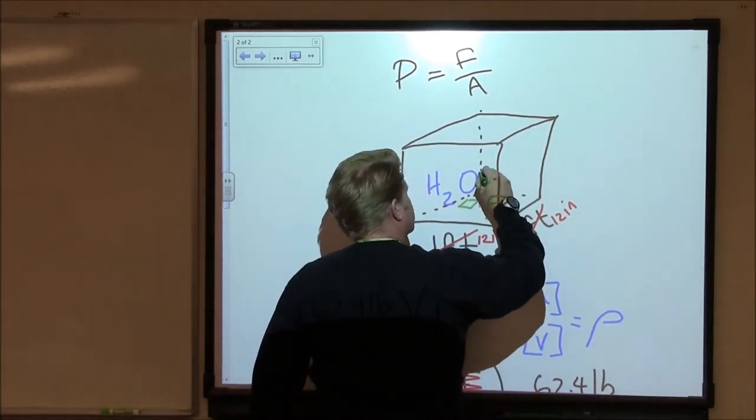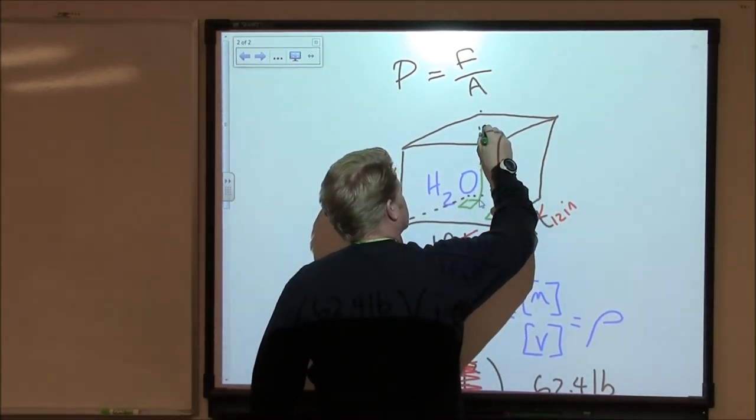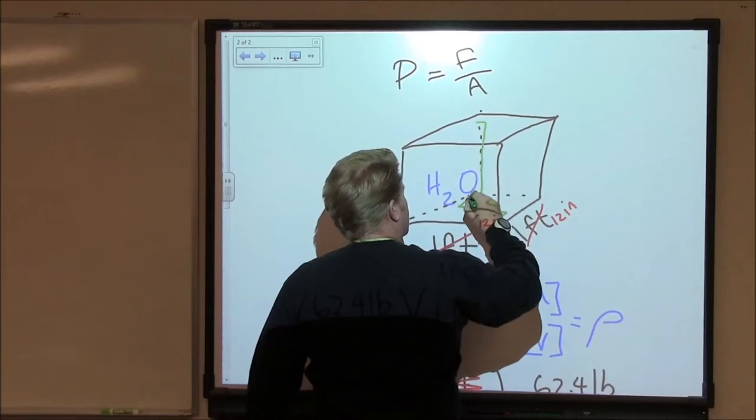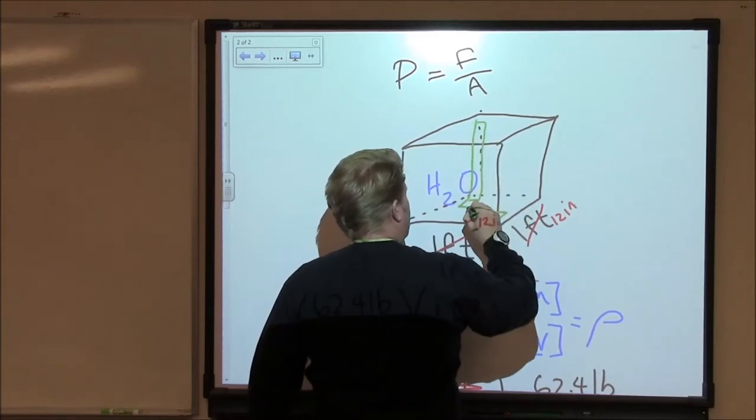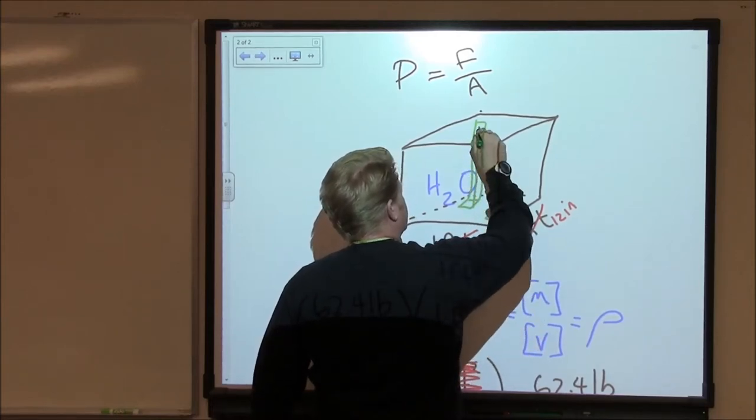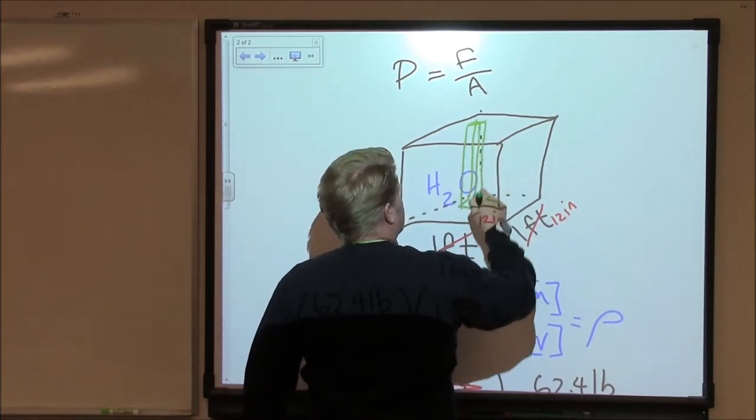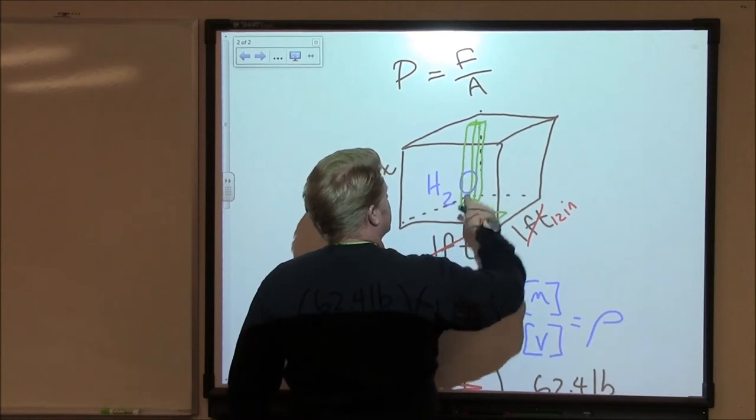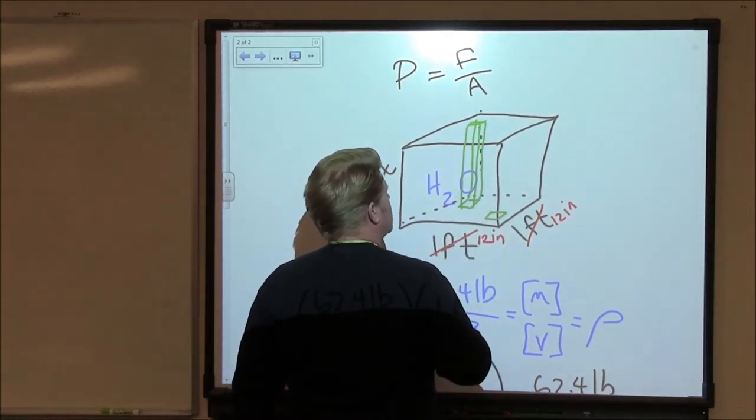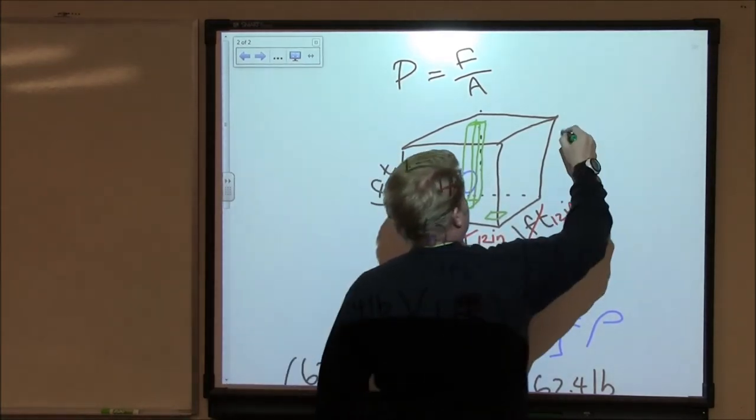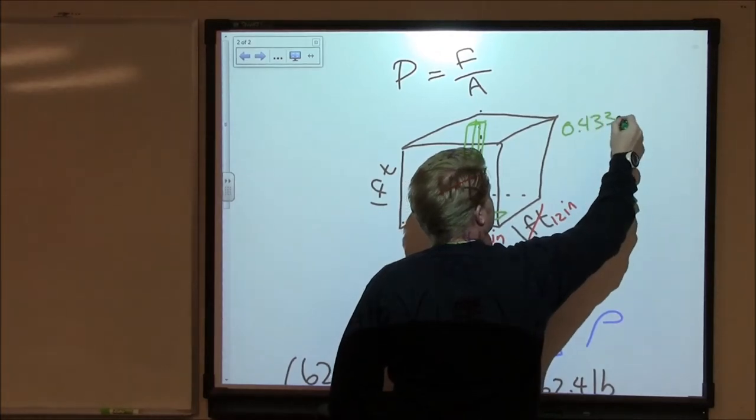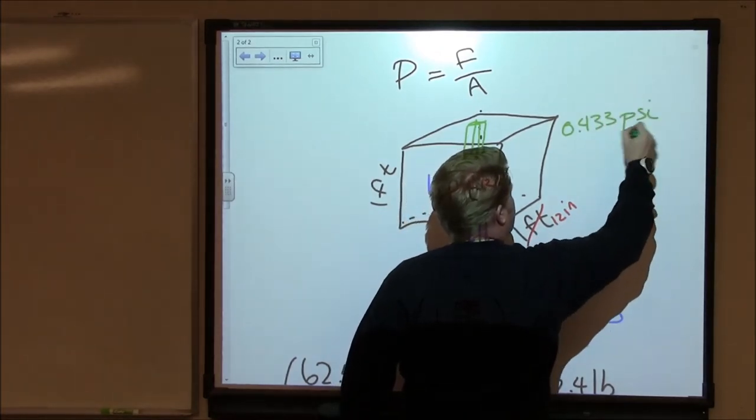So I have this foot column of water right here. It's one inch on the side. It's 12 inches tall. And I have this number, 0.433 psi. Ah, per foot.